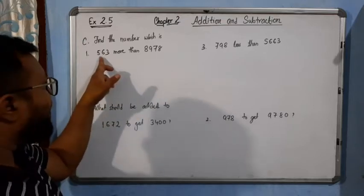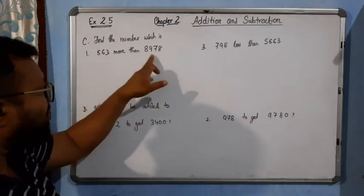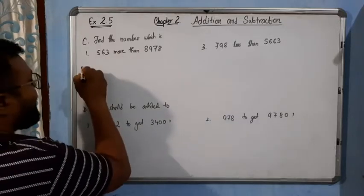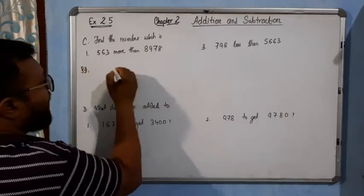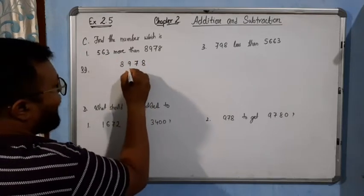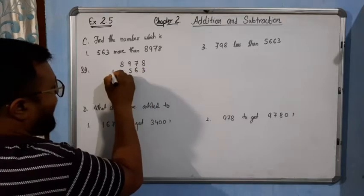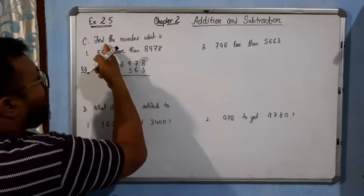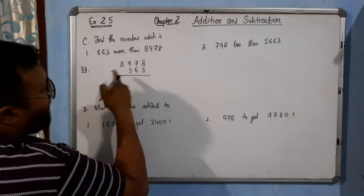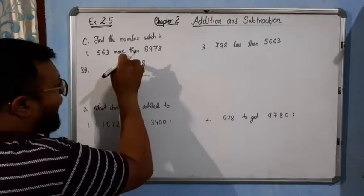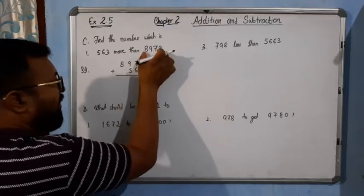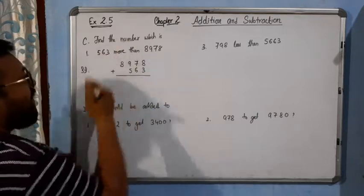What does this mean? Simply we will add 563 to this number, then we will get the number we are looking for. So it is very simple. The solution will be 8978 plus 563. Why? Find the number which is 563 more than this number means we have to add 563 to the given value, and the result will be our required number.